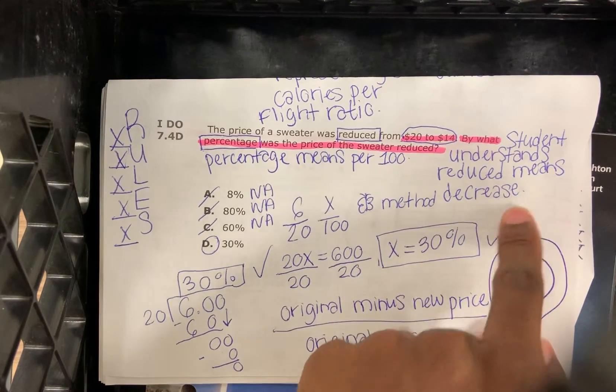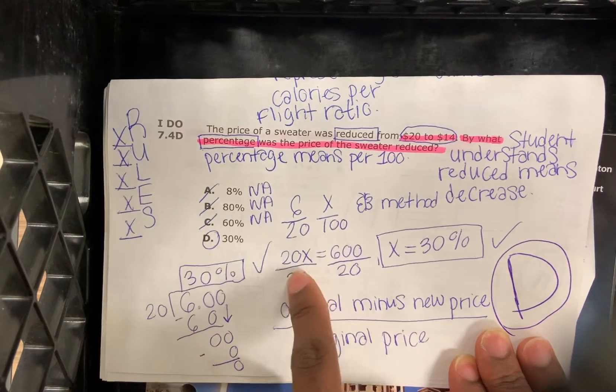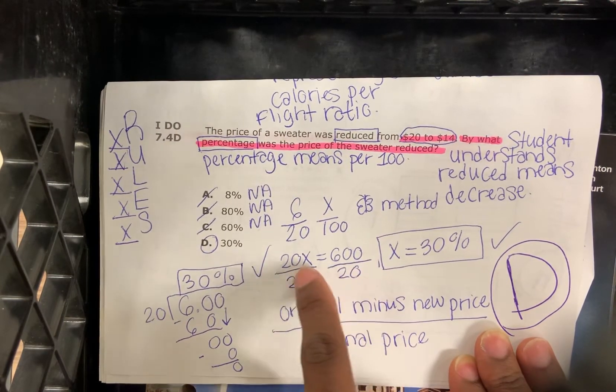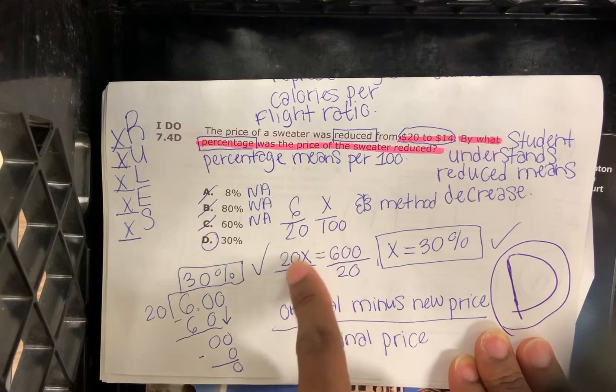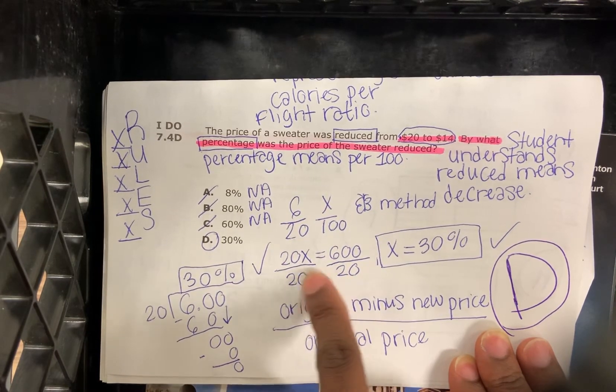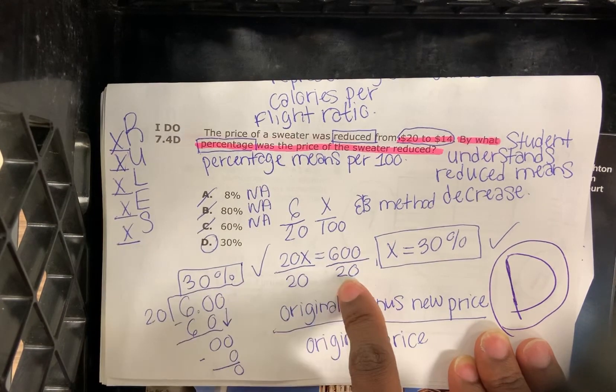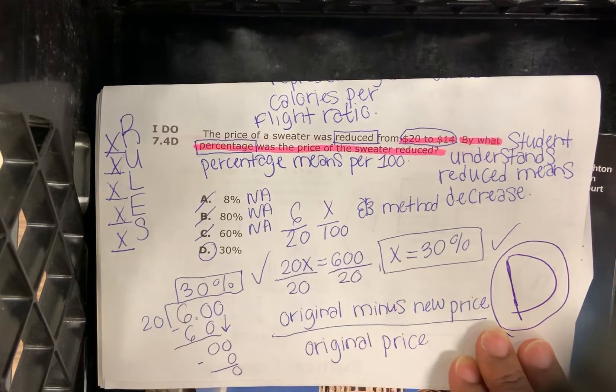Then we do the butterfly method. So 20 times X is 20X, 6 times 100 is 600. Now that's the first step. The second step is to divide both sides by 20. 20X divided by 20 is simply X, and 600 divided by 20 is 30%.